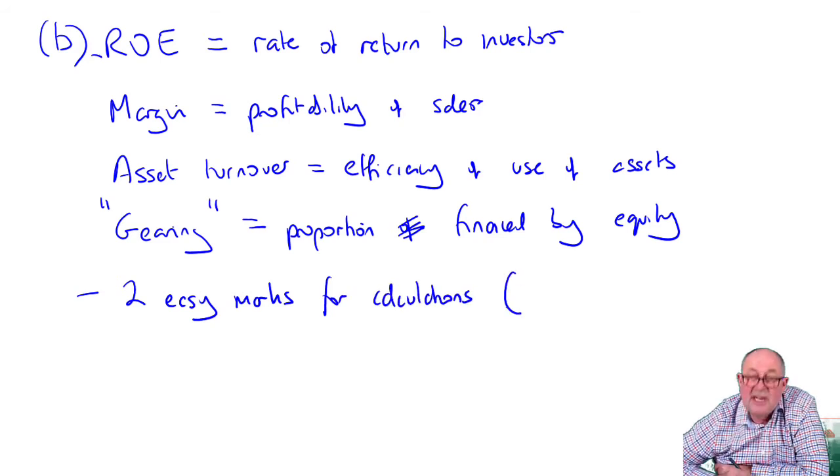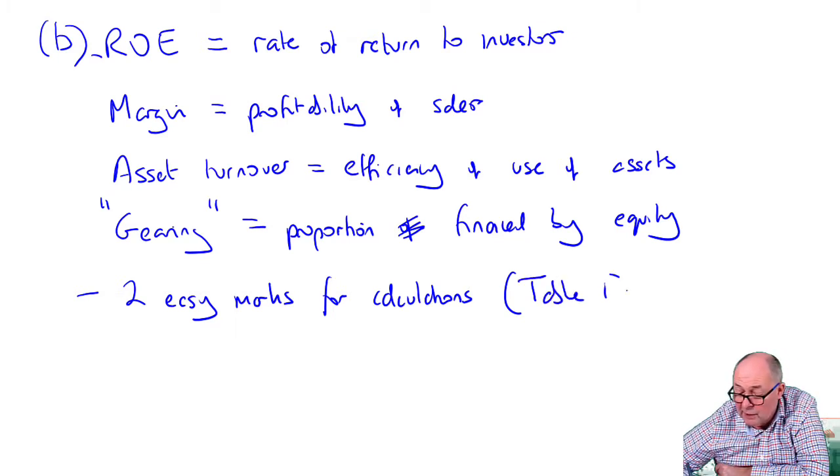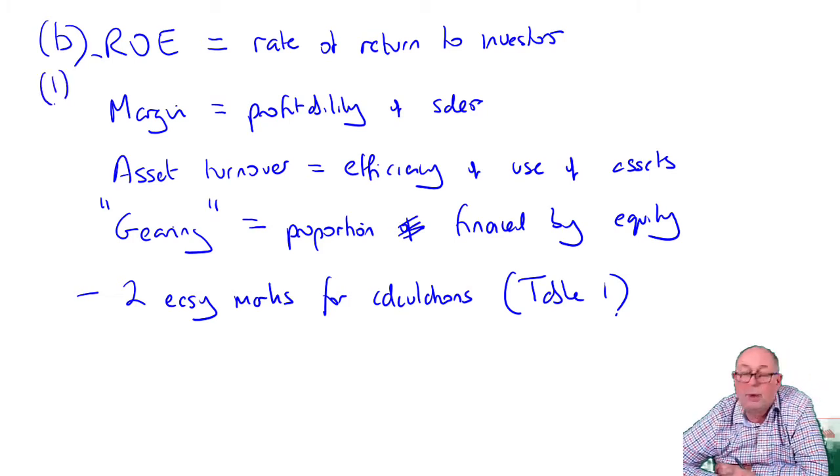I think the danger is that you misread the question and then perhaps don't use table one, in which case you'll very much make a rod for your own back and do something that's not asked for. That's the first requirement.